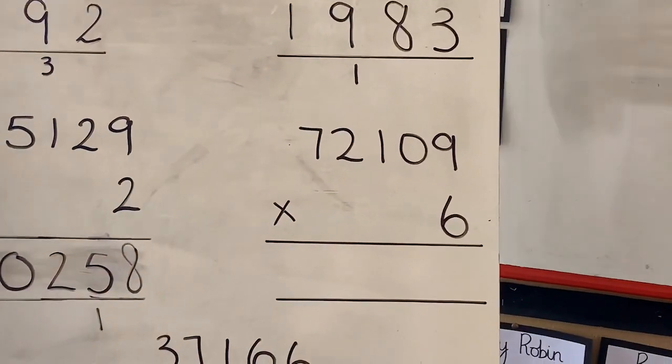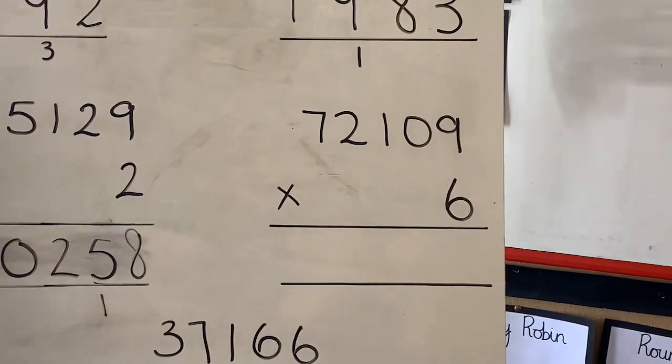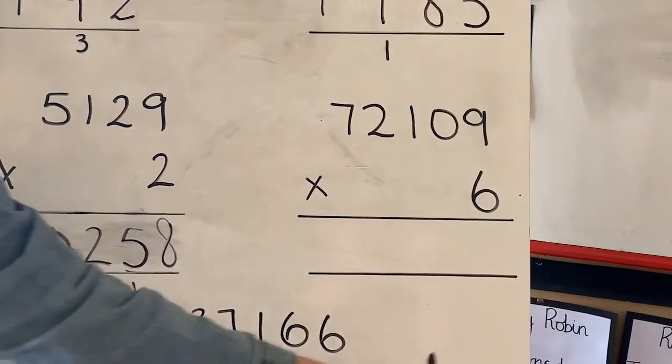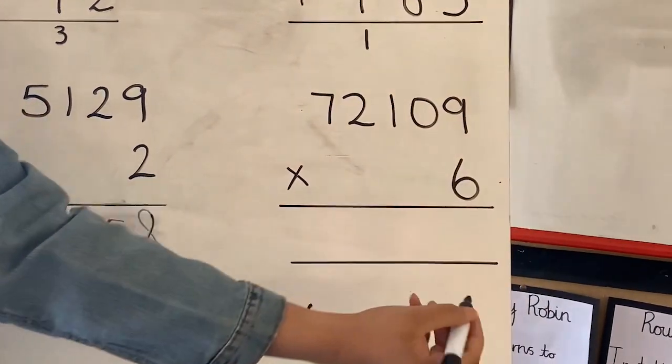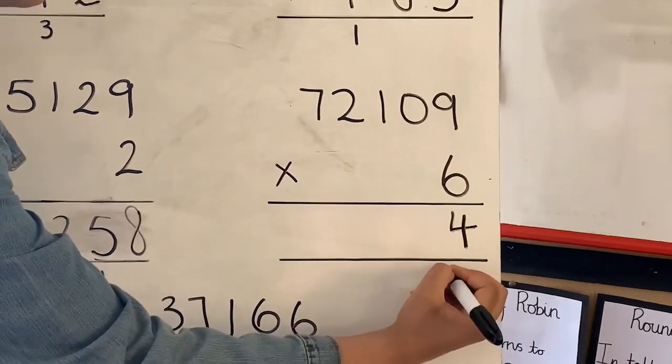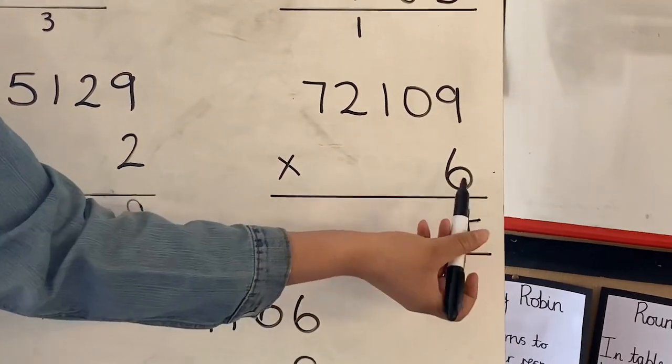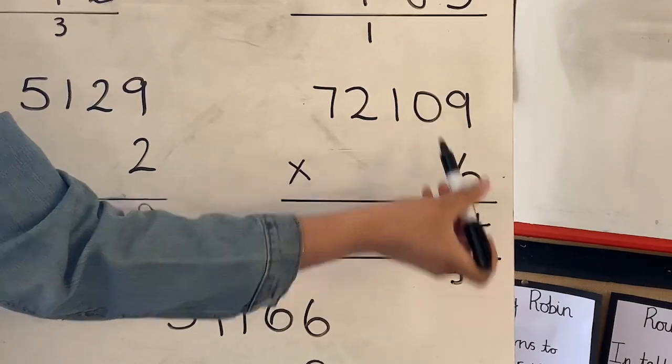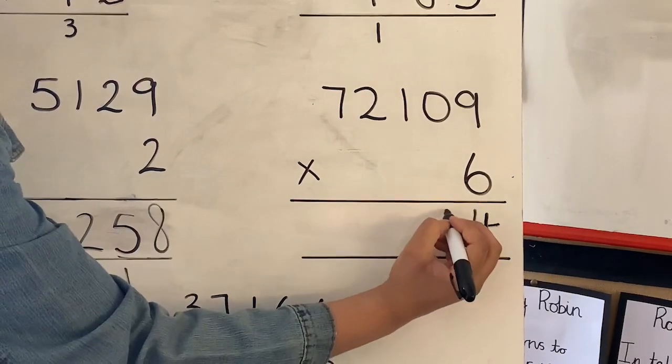Our fourth calculation, 72,109 times 6. Starting off in our ones column again, 6 times 9 which is 54, so put the 4 down, I'm going to carry over the 5 into the next column. 6 times 0 which is 0, but add the 5 we've carried over which is 5.